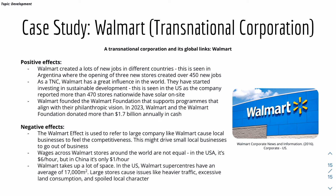On the negative side, the term 'Walmart effect' refers to large companies like Walmart causing local businesses to feel the competitive pressure, potentially driving small local businesses out of business — as these TNCs have lower prices and greater reputation. Wages across Walmart stores worldwide are not equal: in the US it's around $6 an hour, but in China, after conversion, it's only about $1 per hour. Also, Walmart takes up a lot of space — US Walmart supercenters average 17,000 square meters of land area — and large stores cause issues like heavier traffic, excessive land consumption, and loss of small local character.